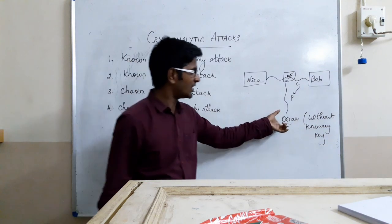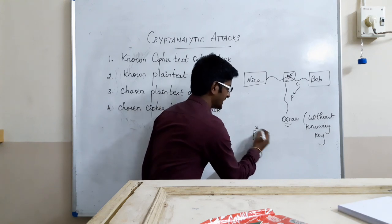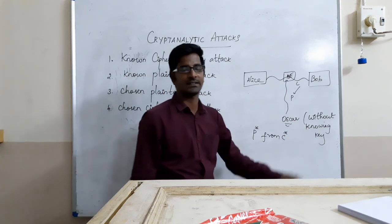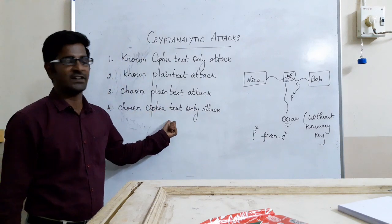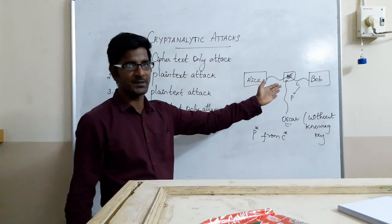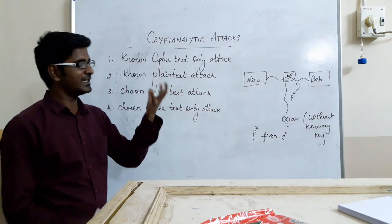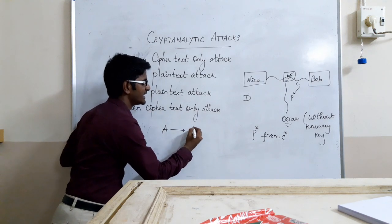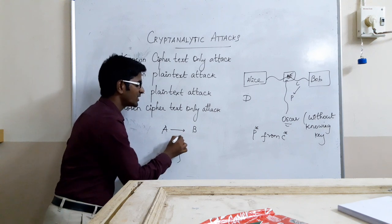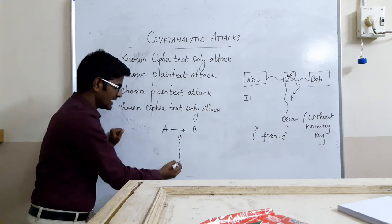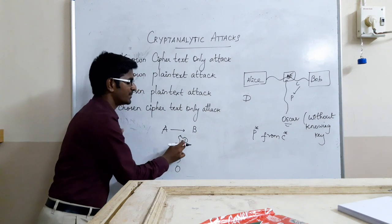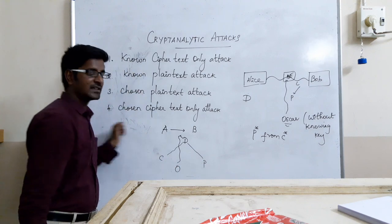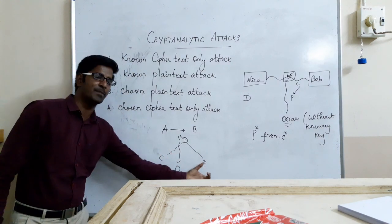In the third category, the goal of Oscar is to find the key or get the plaintext from the ciphertext. The fourth category is the Chosen Ciphertext Attack. In the Chosen Plaintext Attack, he gives plaintext to the encryption algorithm and gets the ciphertext. In the Chosen Ciphertext Attack, he knows the ciphertext, so he gives that ciphertext to the decryption algorithm. Alice is sending some communication to Bob; Oscar, as an adversary, doesn't know the key, so he chooses some ciphertext. Temporary access to the decryption algorithm is given, so he gives that ciphertext to the decryption algorithm and gets the plaintext. The goal of Oscar in this case is to get the key as well as to get the plaintext from the ciphertext.